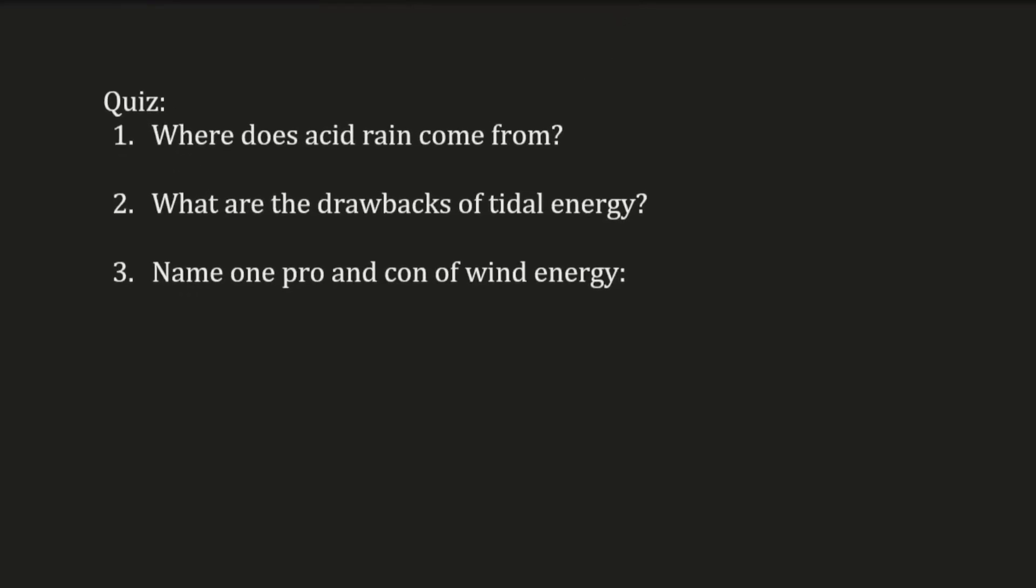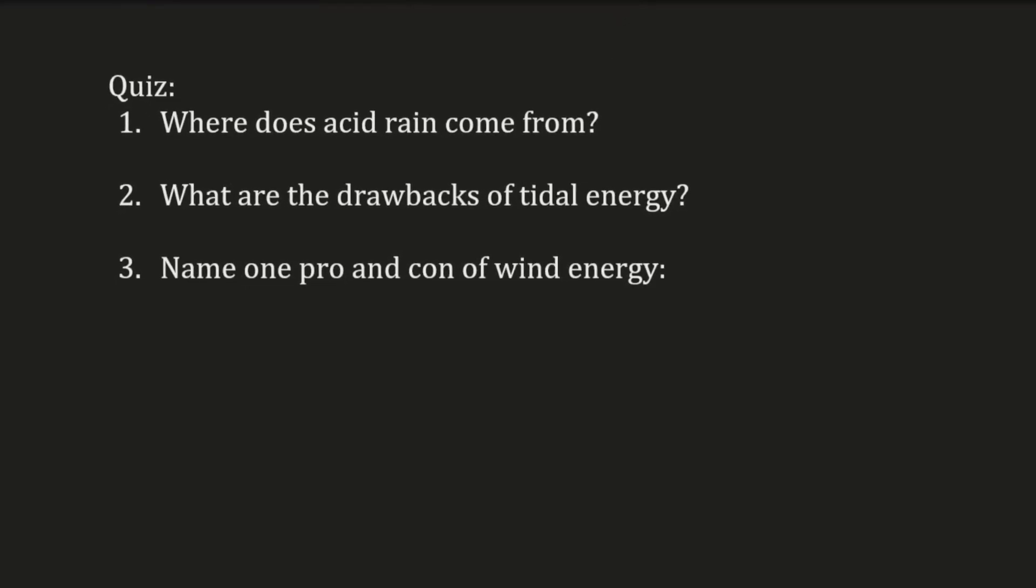Okay, so quick quiz time then, feel free to pause the video to have a go. Question one, where does acid rain come from? Well, acid rain is often sulfuric acid, specifically, and so it comes from impurities in fossil fuels. Okay, so the key thing is when you burn fossil fuels, you might end up producing sulfuric acid as a byproduct.